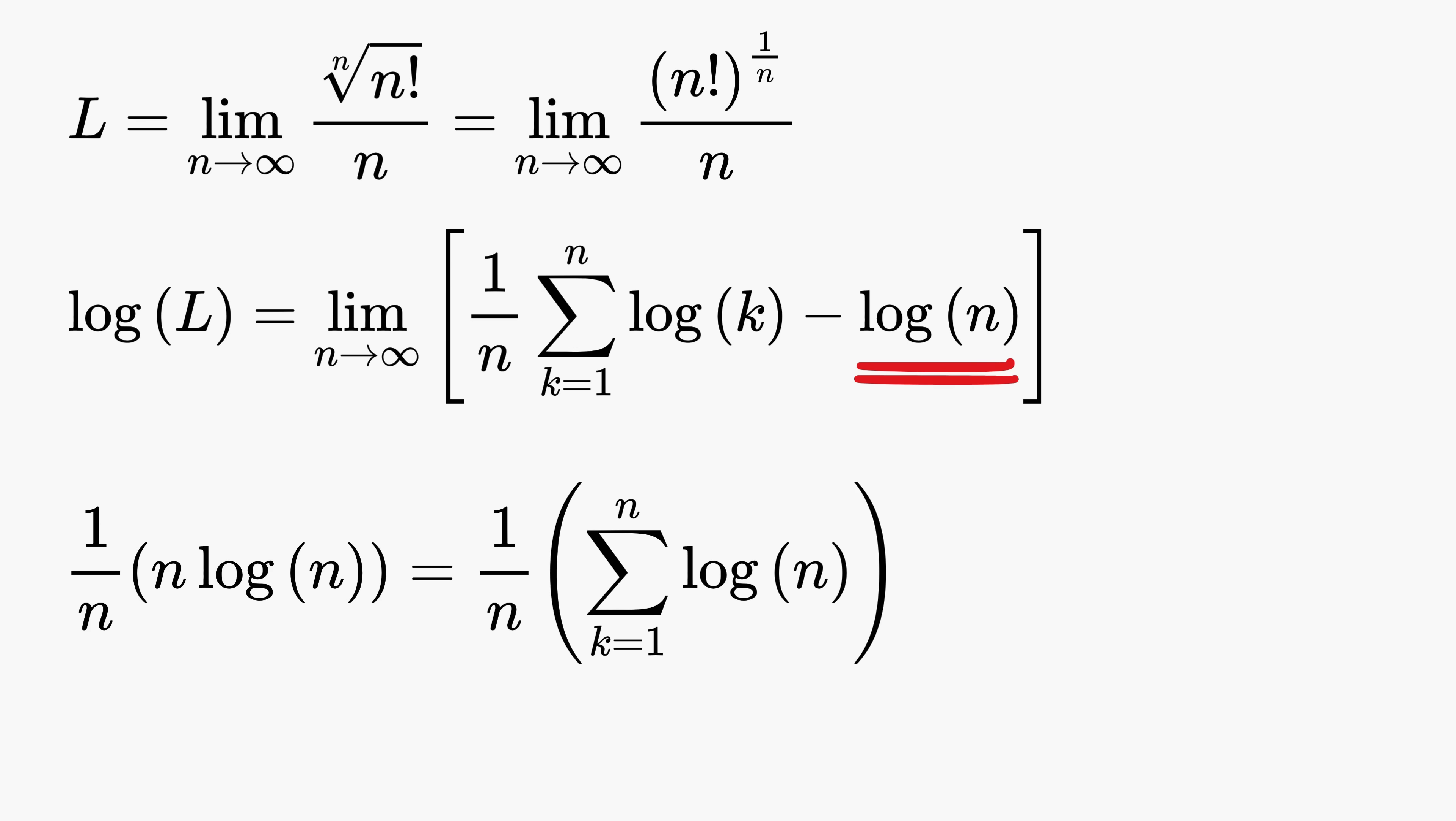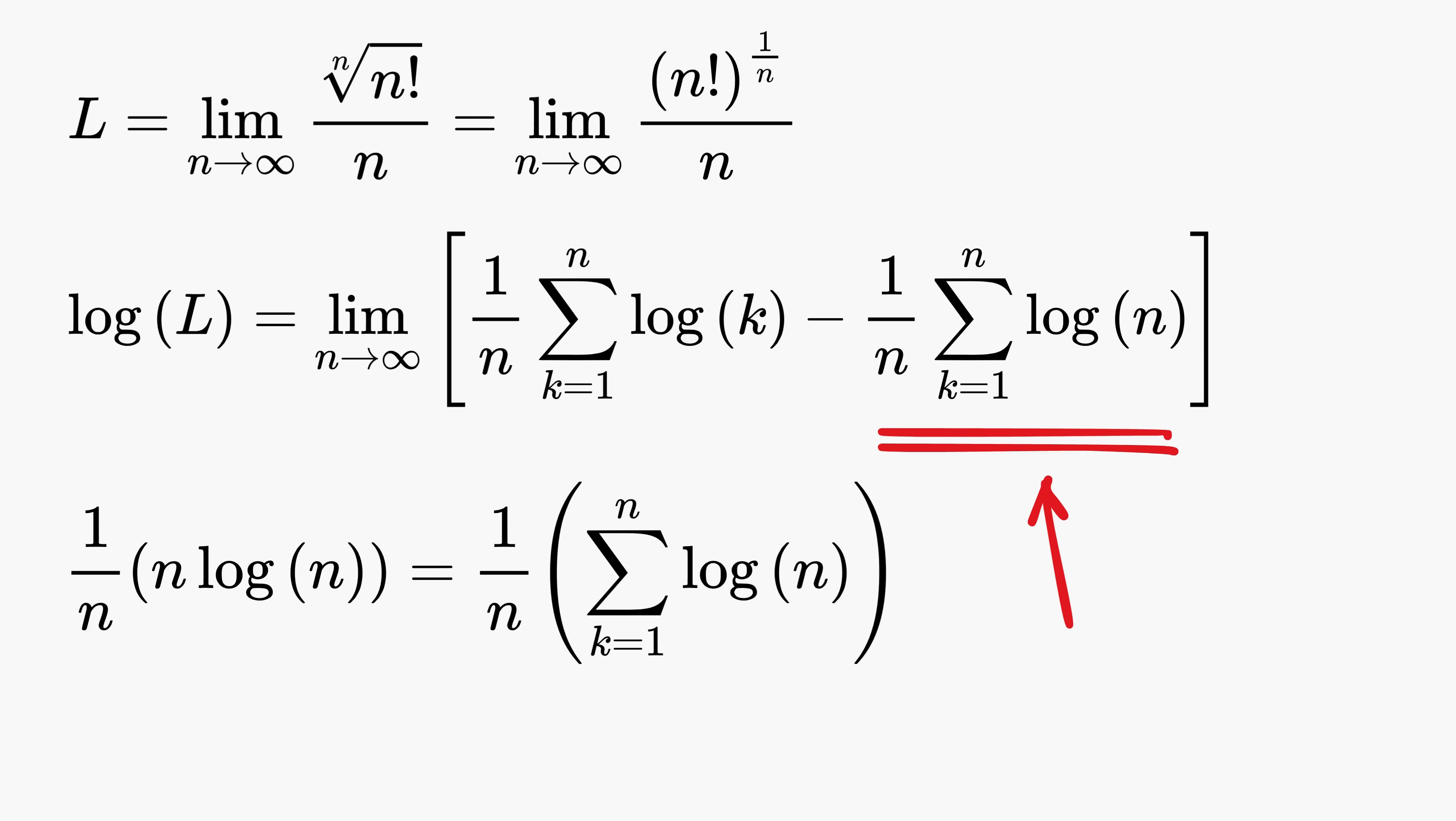This was a crucial step because once we rewrite log(n) in summation form, both parts of our expression now involve sums over the same index k equals 1 to n. Observe that both terms are written as summations and both have a common factor of 1/n, so we can combine them into a single summation.